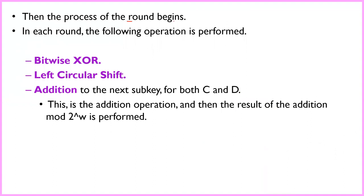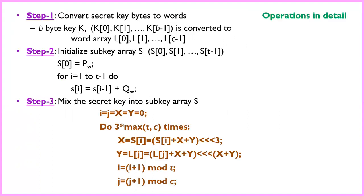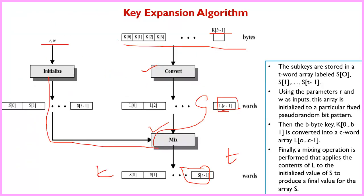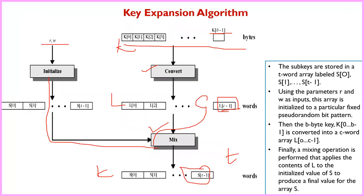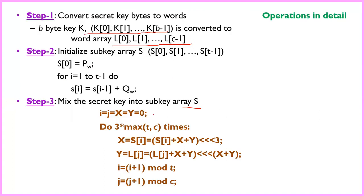The processing of each round uses three basic operations: bitwise XOR, left circular shift, and addition. In the key expansion, first you convert the secret key bytes to words stored in array L, then you initialize the sub-key array S, and then you mix the secret key array into the sub-key array S. These three steps — convert, initialize, and mix — generate the sub-keys.